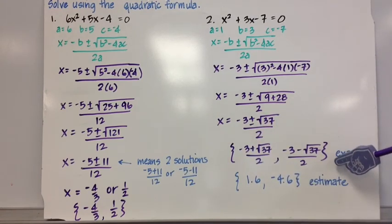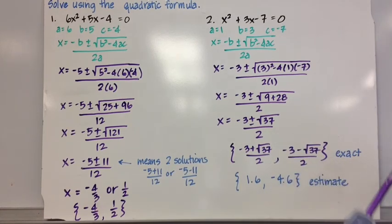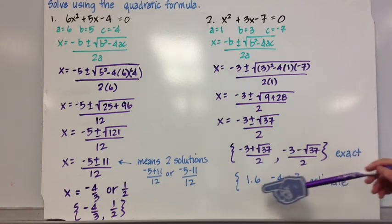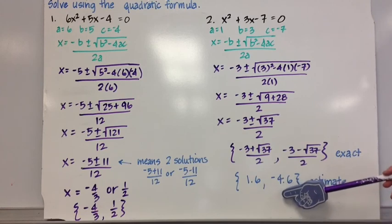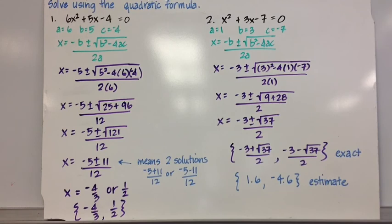Sometimes, you'll need to estimate the value of the square root of 37 to estimate your answer, maybe to put it in context for a problem or whatever. So my estimate to the nearest tenth would be 1.6 and negative 4.6. Try some of these.